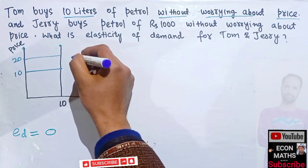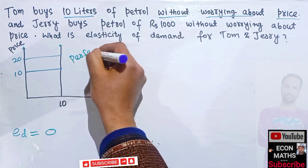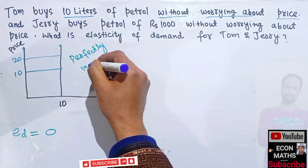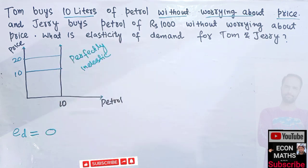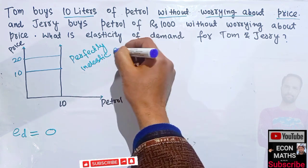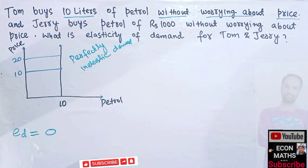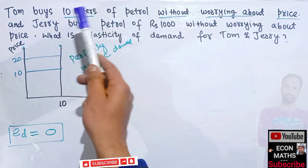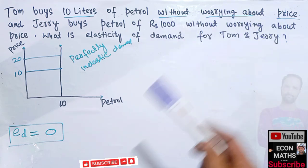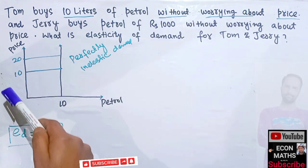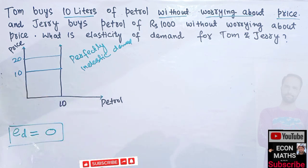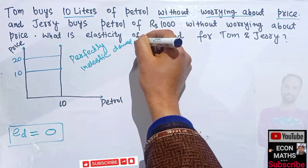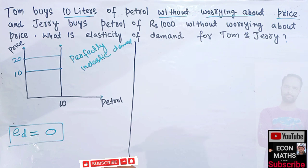This vertical line on the graph denotes perfectly inelastic demand. By perfectly inelastic demand, we mean the elasticity of demand is equal to zero. Tom doesn't care about price — whether it is 10 or 20, he will demand only 10 liters. At that point we say price elasticity of demand is zero, representing perfectly inelastic demand.